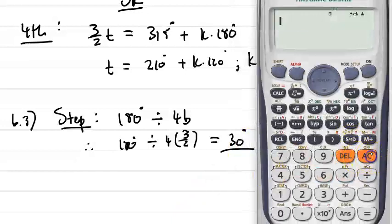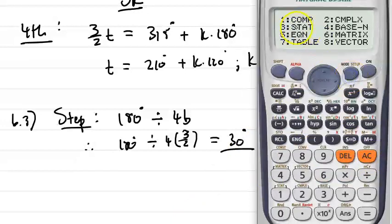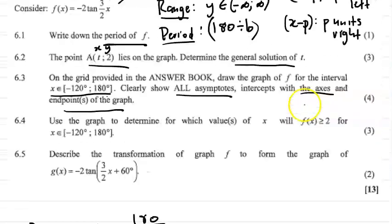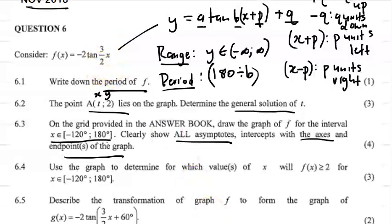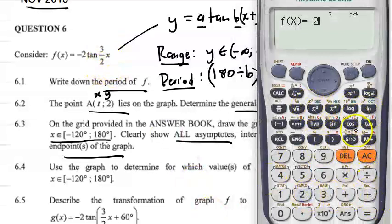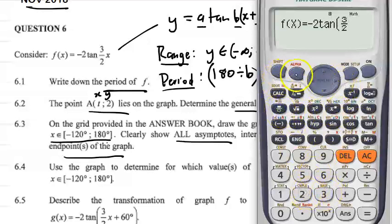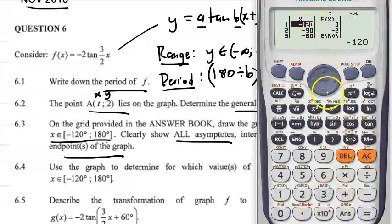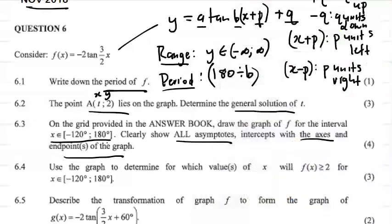Let's go to the calculator. We go to table mode, which is mode 7. Our function is minus 2·tan(3/2·x). Enter: minus 2, tan, 3/2, x — press alpha and bracket. Start is minus 120, end is 180, and the step is 30 degrees. That gives us nice values to work with.